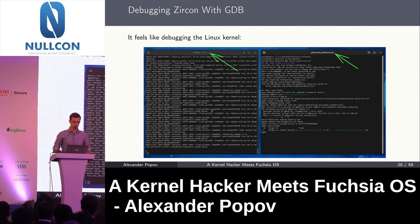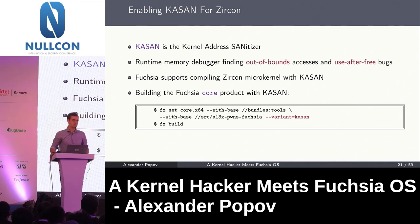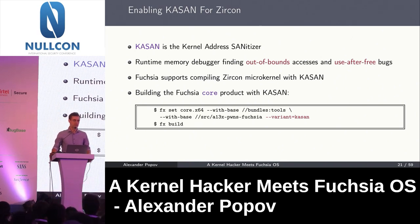In the first terminal we have QEMU running with Fuchsia, and in the second terminal we have the GDB client connected to the GDB server in QEMU. For every successful security search of C++ code, we need a detector that reveals memory corruption bugs. For C and C++ operating system kernels, there is such a detector — it is KASAN, the kernel address sanitizer. It can detect out-of-bounds accesses and use-after-free memory corruptions at runtime.